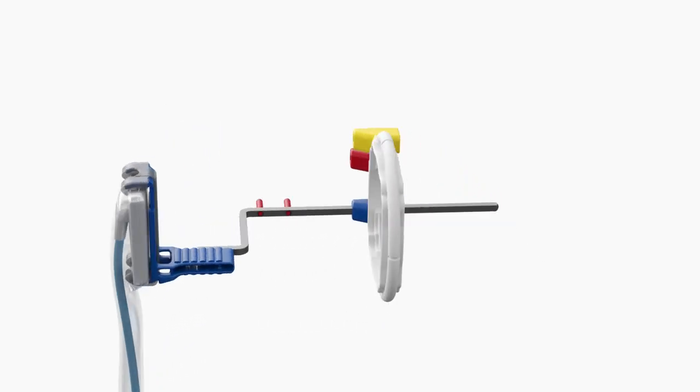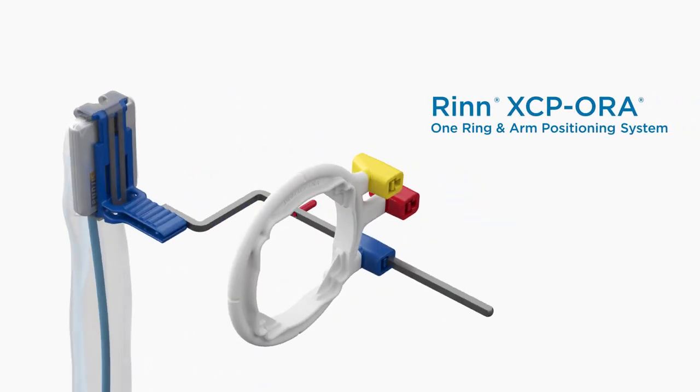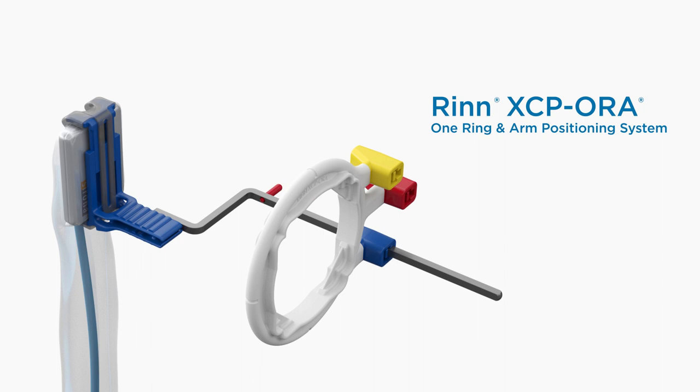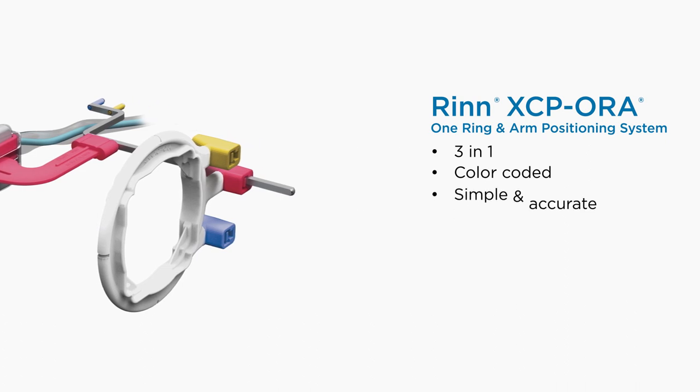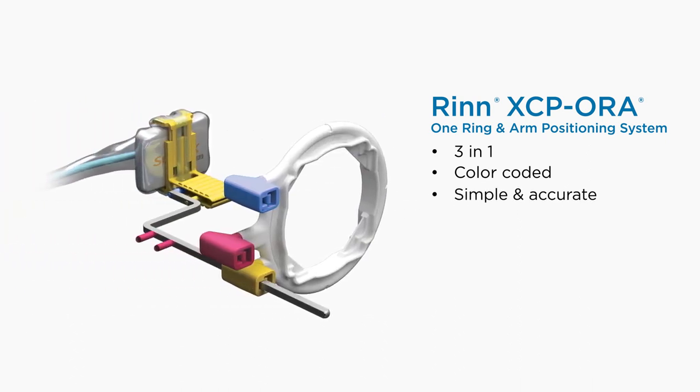With the RIN XEP Aura one ring and arm positioning system, the three-in-one positioning ring coordinates with the color-coded bite blocks for a simplified and more accurate paralleling technique.